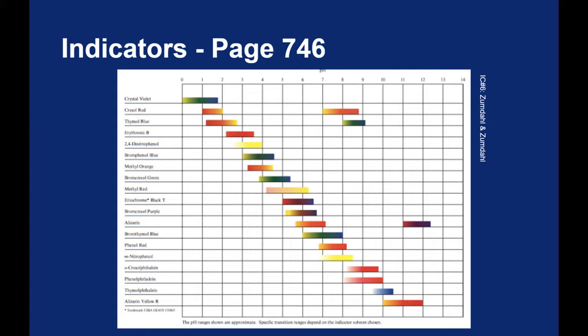If in a strong acid and a strong base, you want an indicator change somewhere around 7. A strong base and a weak acid, you would want something in a higher pH range. And a strong acid and a weak base, you want a lower pH range.